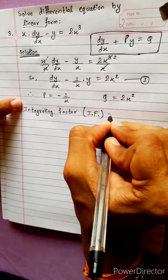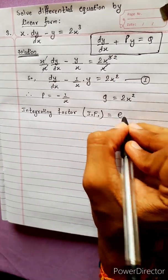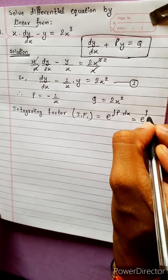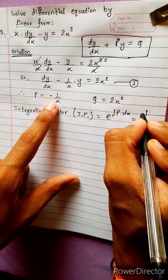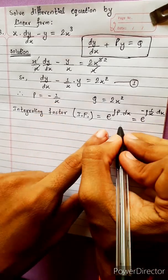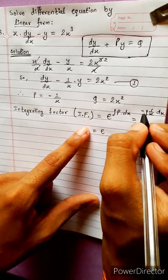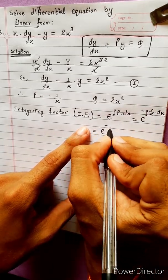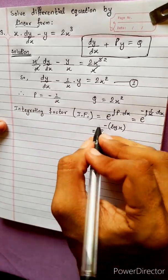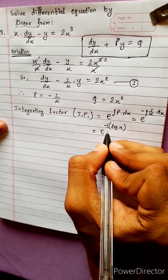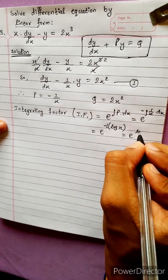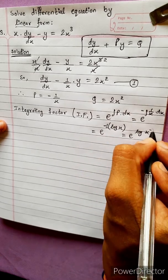The integrating factor equals e to the power of the integral of p dx, which equals the integral of minus 1 by x dx. The integral of 1/x dx is log x, so this gives minus log x, which equals log x to the power minus 1.